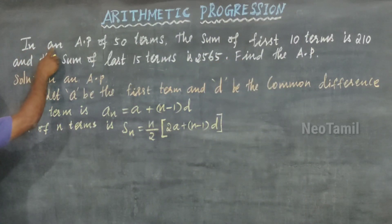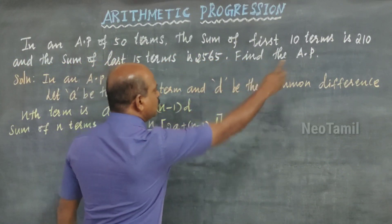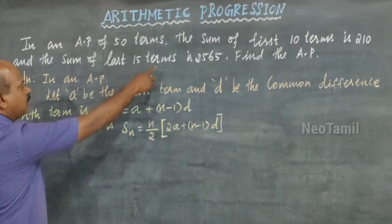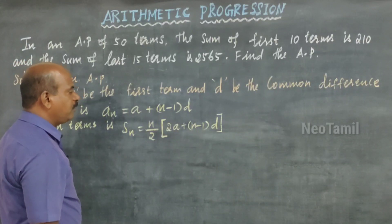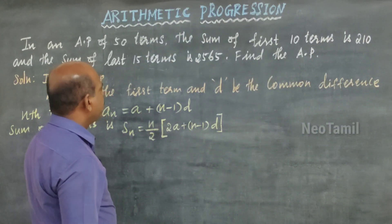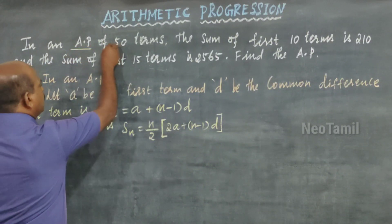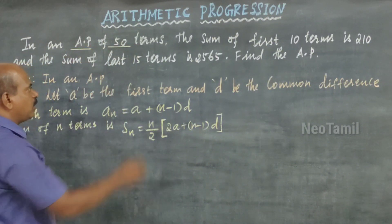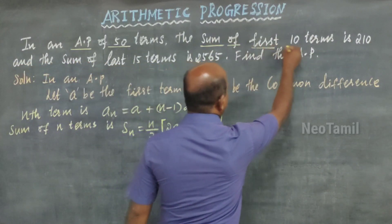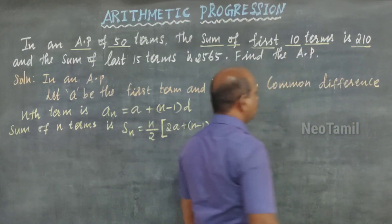See the question: in an arithmetic progression of 50 terms, the sum of the first 10 terms is 210 and the sum of the last 15 terms is 2565. Find the AP — AP meaning arithmetic progression. The total number of terms is 50, and the sum of the first 10 terms is 210. This is the first condition.